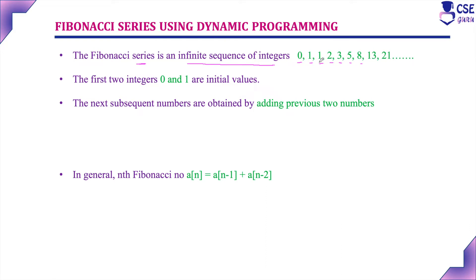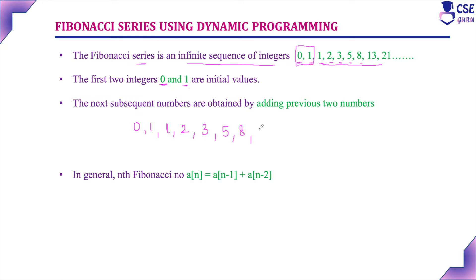How we can generate the series: first, we need to consider the initial values 0 and 1. With the help of these two values only, we can generate the remaining sequence. We add the two values to get the next number — 0 plus 1 gives 1, then 1 plus 1 is 2, 1 plus 2 is 3, 2 plus 3 is 5, 3 plus 5 is 8, 8 plus 5 is 13, 13 plus 8 is 21, and likewise.